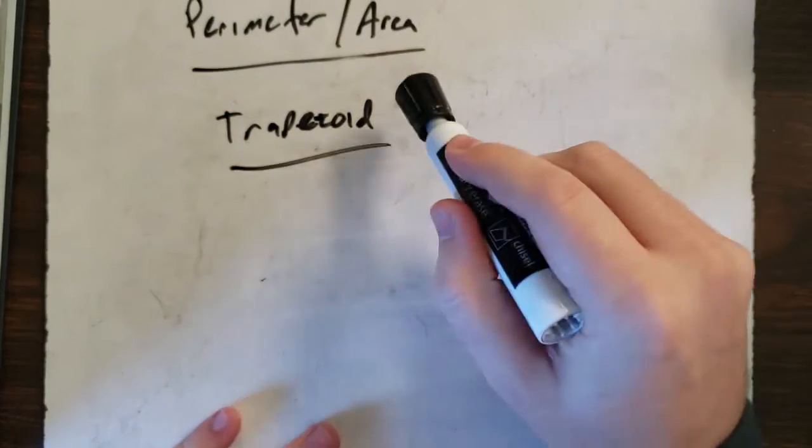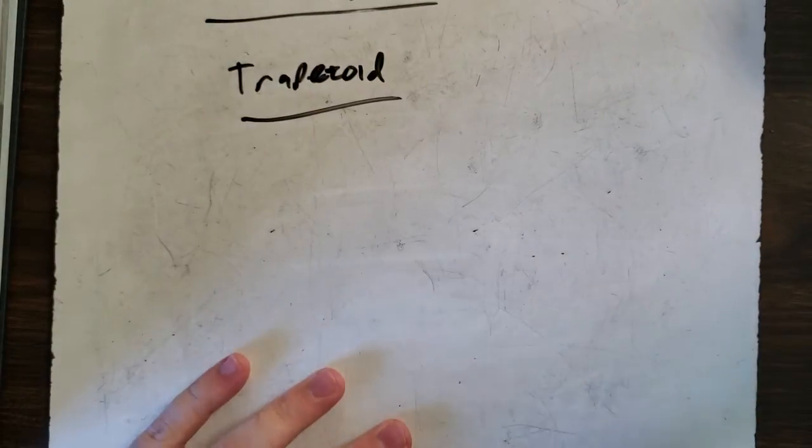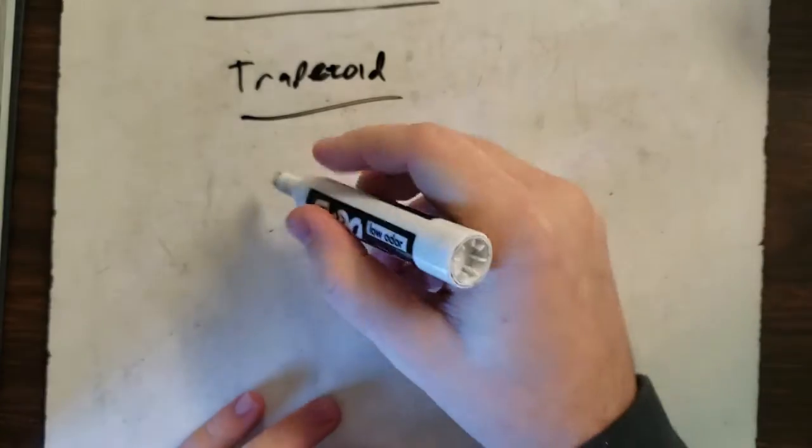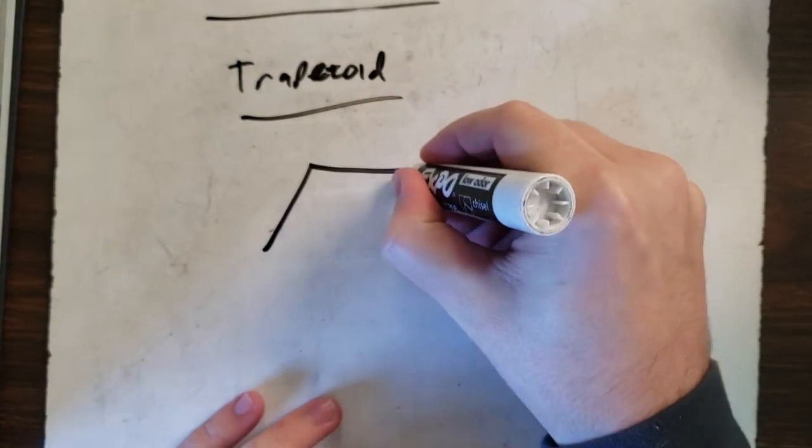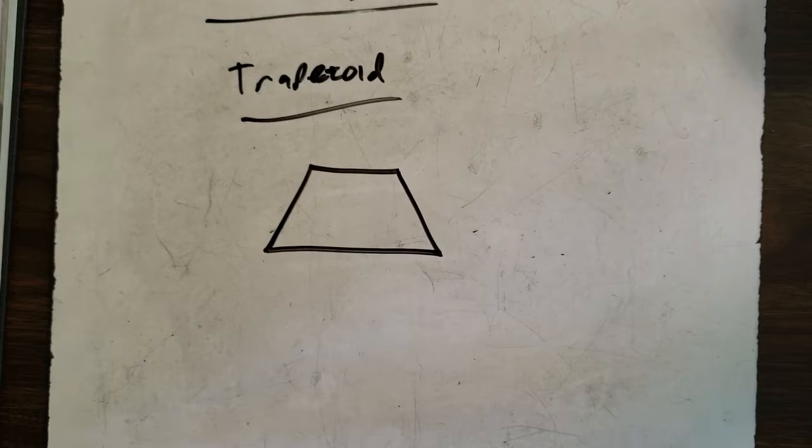Our next shape is a trapezoid. So area and perimeter of a trapezoid. Our trapezoid looks like this. That's our trapezoid.